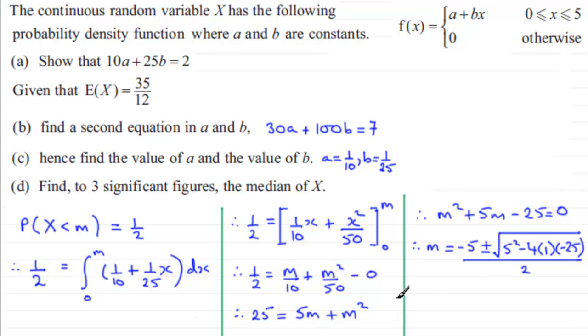Now if you work this out on your calculator, what you should find is you're going to get two values for m. If we take the positive value here, you find you get 3.0901 and so on. And if you take the negative value, you end up with minus 8.09 and so on.